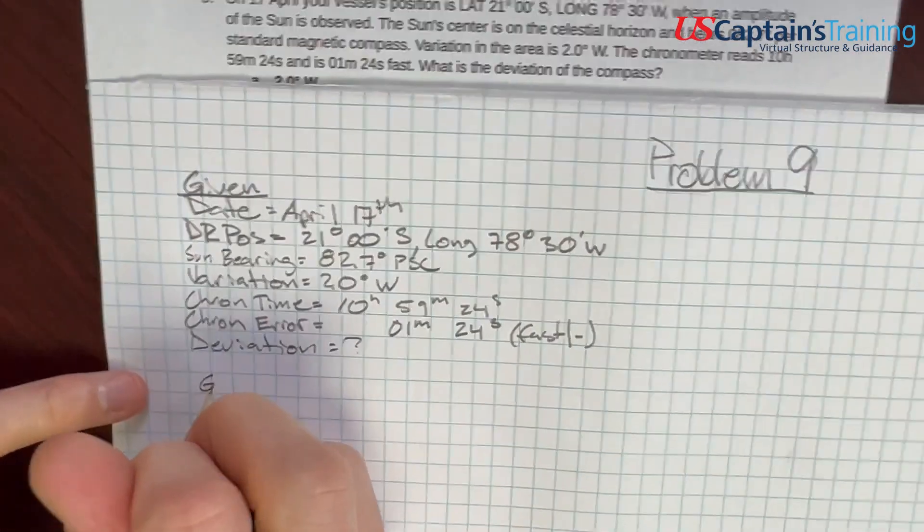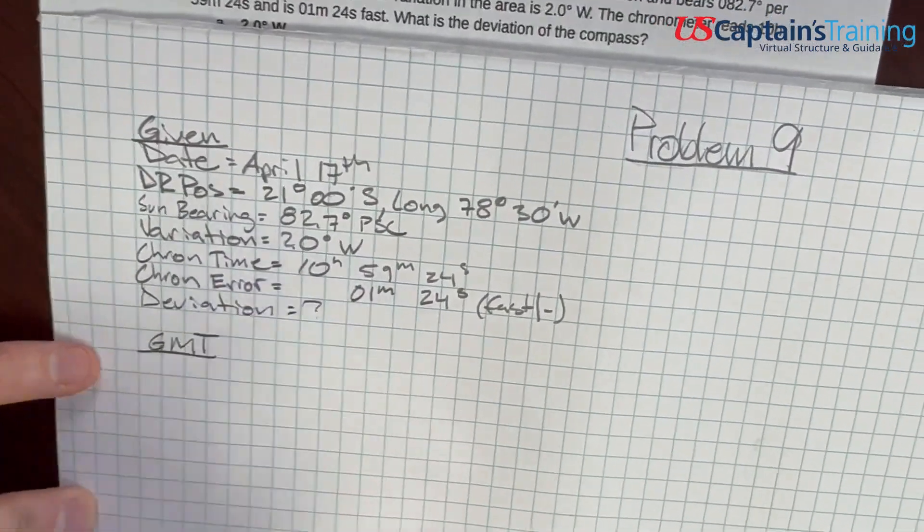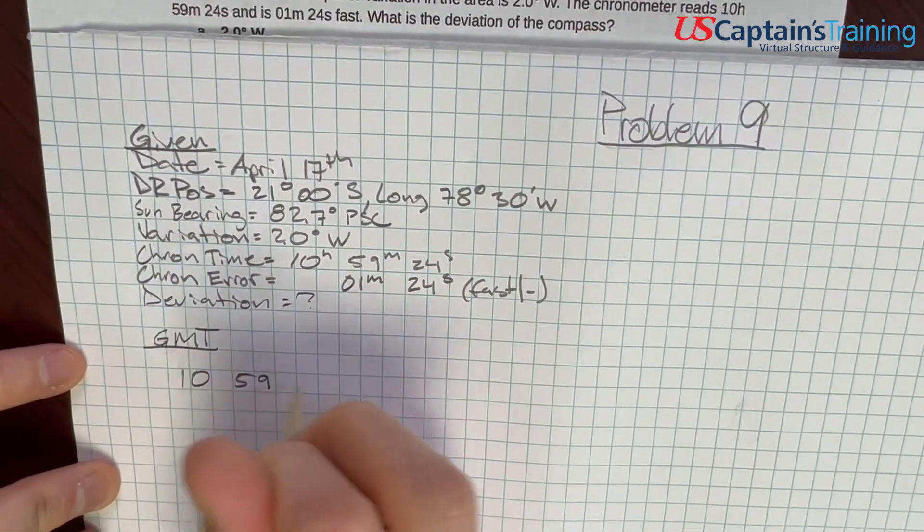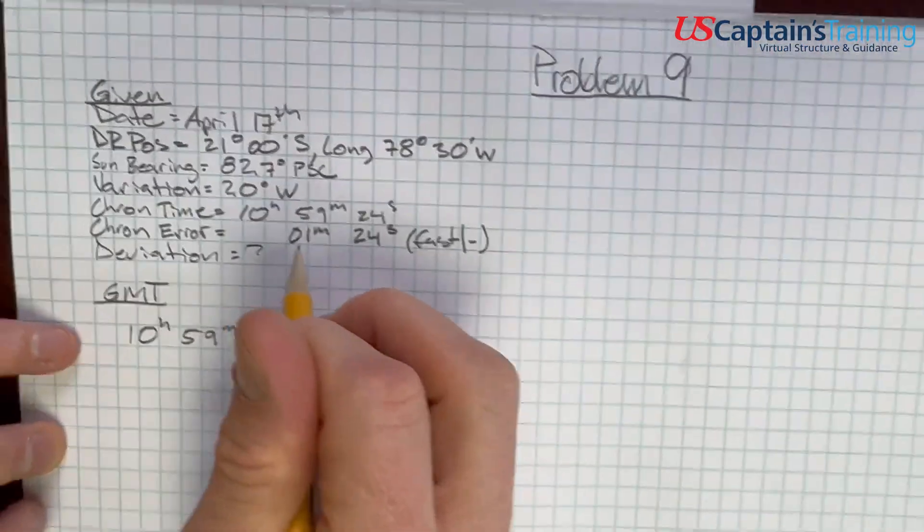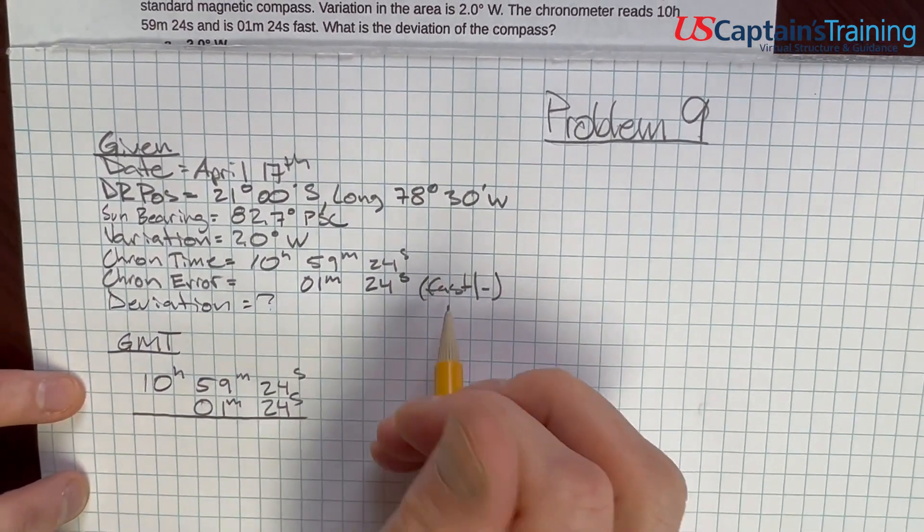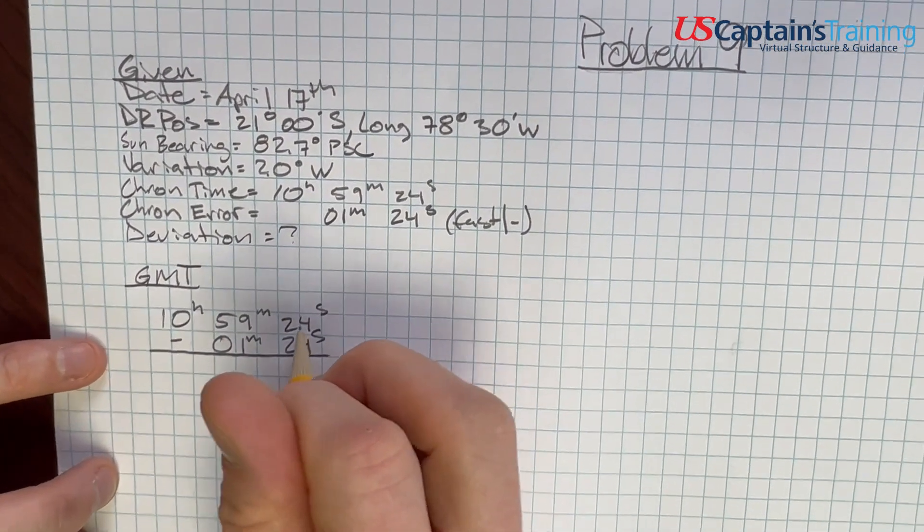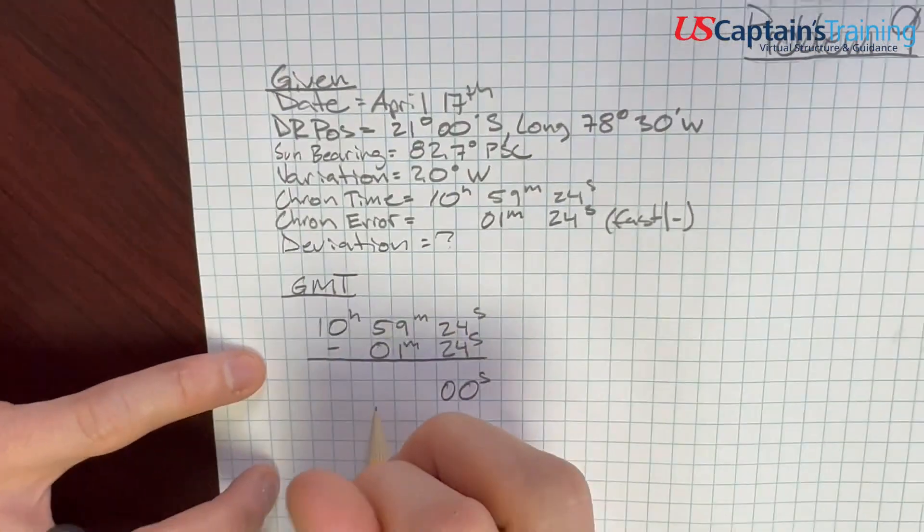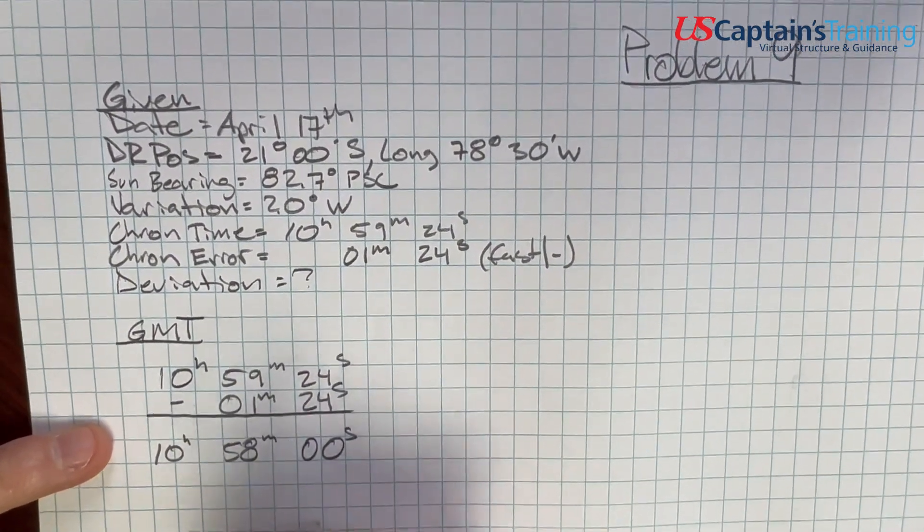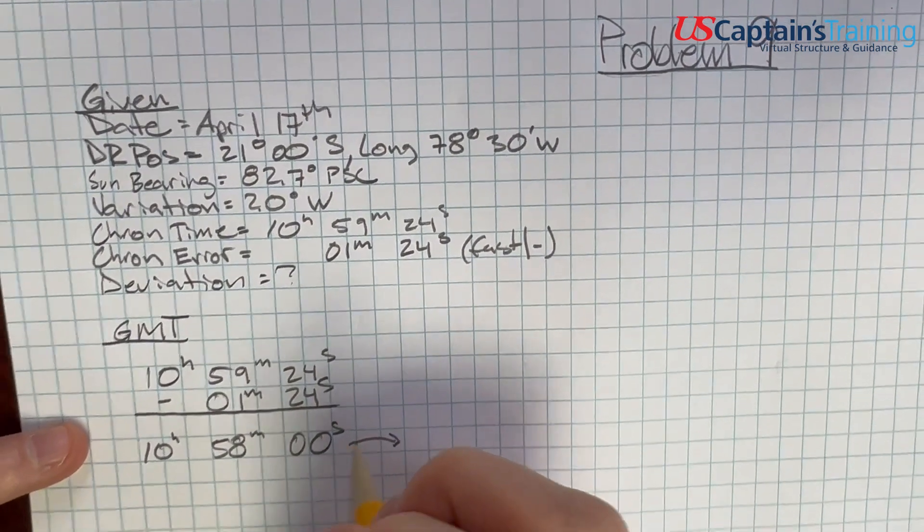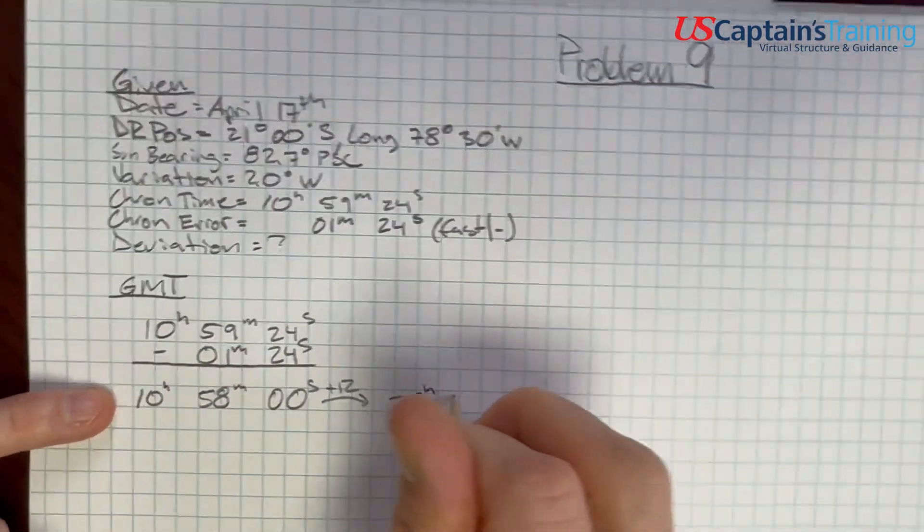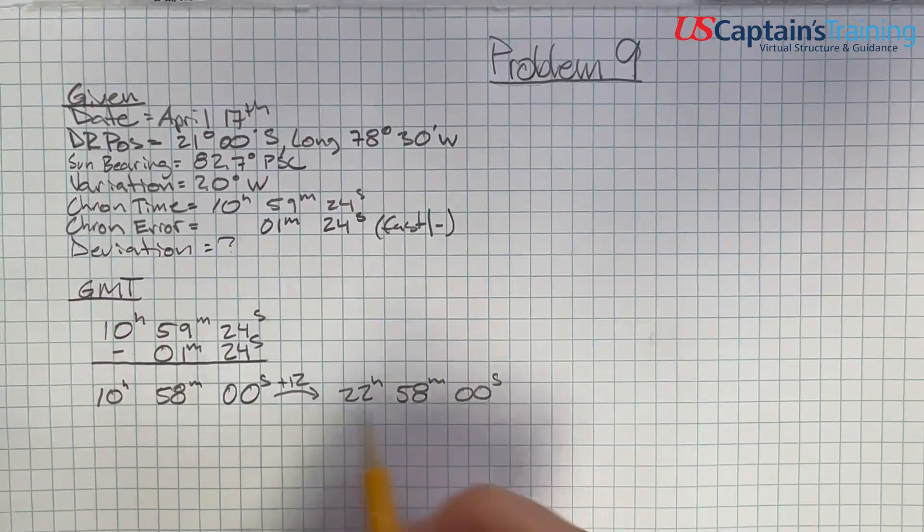First thing we do is we get the GMT, the Greenwich mean time, so we can get into the nautical almanac and get the declination. So Greenwich mean time is we take the chronometer, 10.5924. We got 10 hours 59 minutes 24 seconds. And we get the error on there, 1 minute 24 seconds. And do we add or subtract it? Well, it's fast, so we subtract it. What does this give us? 24 minus 24 gives us 0. 59 minus 1 gives us 58. And 10 hours. Interesting thing about a chronometer is it's only 12 hours, so it goes around twice in a day. We have to figure out, are we on the first time around or the second? So if we add 12 hours to that, 10 plus 12 is 22. 22 hours, 58 minutes, 0 seconds. Which one of these do we use?